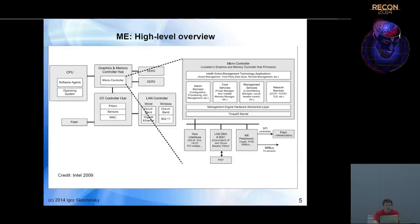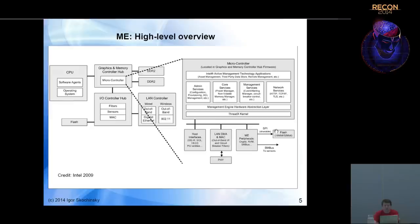Here's the diagram from Intel's documentation. You can see the CPU on the left, then the graphics and memory controller hub, which is part of the chipset, and this microcontroller is placed inside it. It runs an RTOS called ThreadX, and has several different software components responsible for different management tasks, with interfaces to the host OS and to the network card for out-of-band communications.